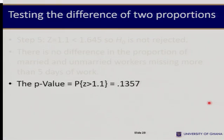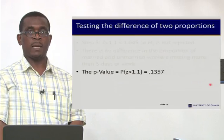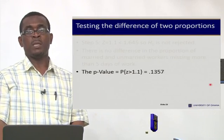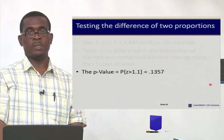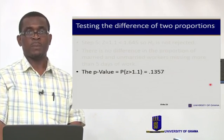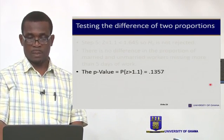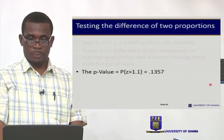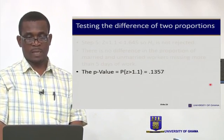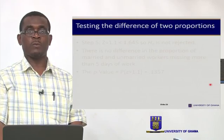We compute pi-hat as 0.1036 and obtain Z equal to 1.1. Since 1.1 is less than 1.645, we do not reject the null. The conclusion is that there is no difference in the proportion of married and unmarried workers missing more than 5 days of work. Using the p-value approach, the p-value is greater than the significance level, so we do not reject.